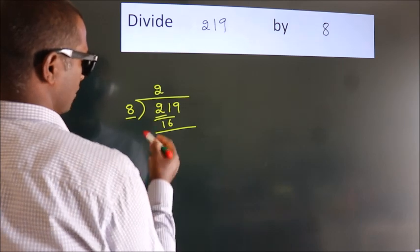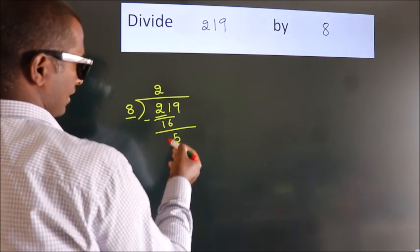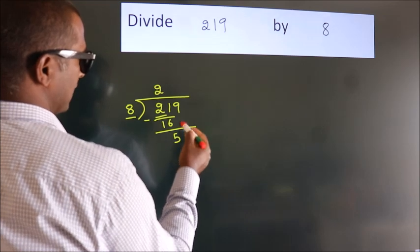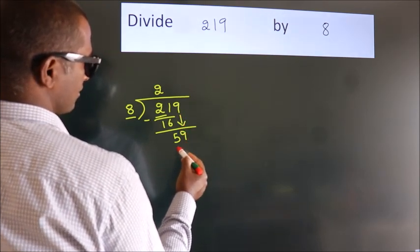Now we should subtract. We get 5. After this, bring down the next number. So, 9 down. So, 59.